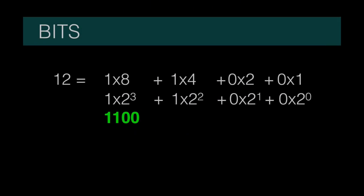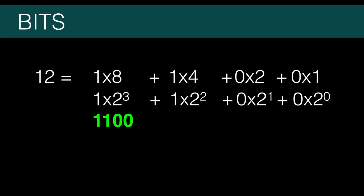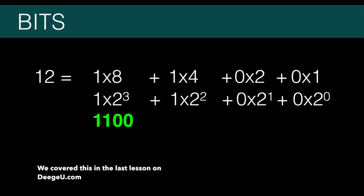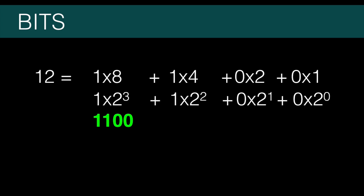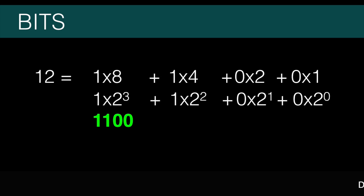Let's start with what we know. We talked about binary numbers in the last lesson and how they're organized to represent positive numbers. Each digit represents a power of 2. This is like the normal power of 10 numbers we already use. So, how does it work with negative numbers?